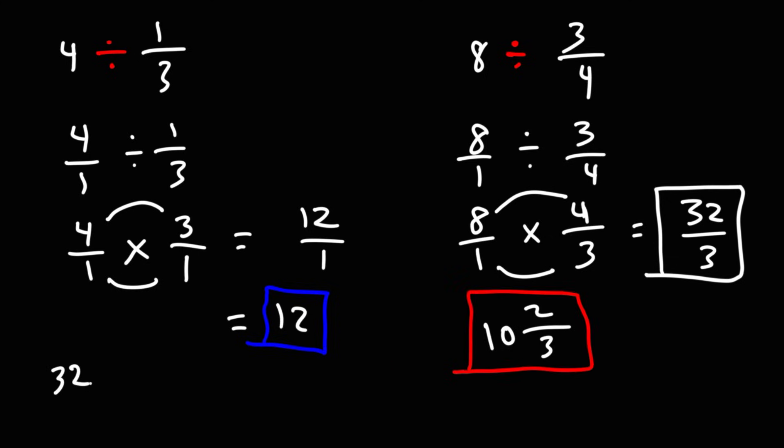You can also do it this way. Break 32 into 30 plus 2 because 30 is the highest multiple of 3 just under 32. Now 30 over 3 is 10. So we get 10 plus 2 thirds, which as a mixed number is 10 and 2 thirds.